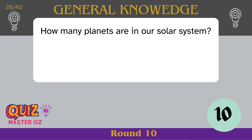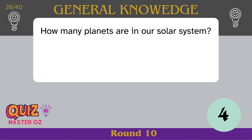How many planets are in our solar system? Eight.